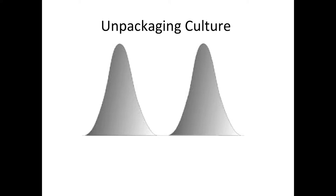One overall point I want to make is that we often talk about unpackaging culture. What that means is we have to go beyond simply knowing that there are two groups that happen to differ in some way on some variable — that culture A and culture B, or group A and group B, are simply different. When we unpackage culture, we're going a little bit deeper. Cultural differences are embedded within a vast network of different cultural practices, beliefs, attitudes, symbols, and norms. So when we unpackage culture, we're identifying the underlying variable that creates the cultural differences we see on the surface.